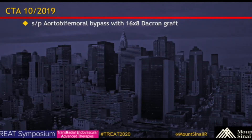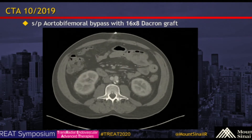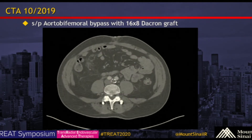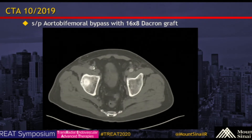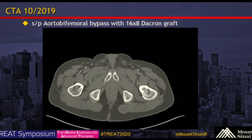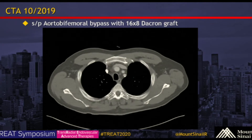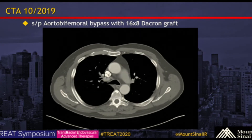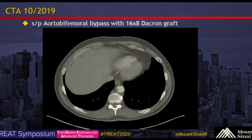He subsequently underwent a transabdominal aorta-bifemoral bypass with a 16 by 8 Dacron graft. Here's the postoperative CTA. You can see there's patency of the aorta-bifemoral bypass graft extending down to the level of the femoral arteries with occlusion of the native femoral arteries. Turn your attention to the left side — you see there's narrowing at the anastomosis. At the level of the arch, it's just nice to take a look at when planning a transradial approach; we see it's non-ectatic or aneurysmal.